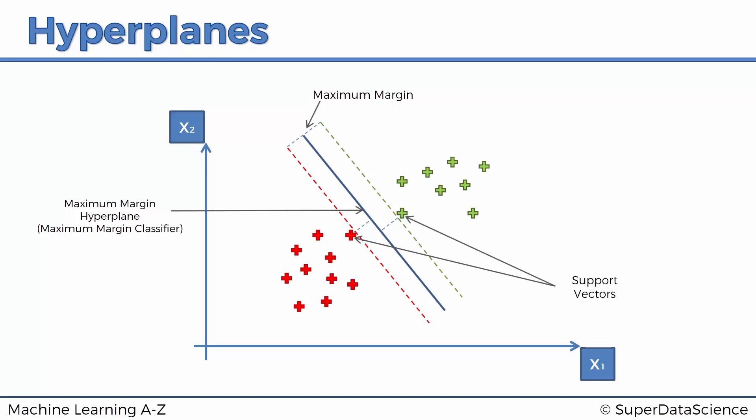In a two-dimensional space, it's just a line, but in a multi-dimensional space, it's a hyperplane. Then you've got the green and red dotted lines. The green one is called the positive hyperplane, and the red one is called the negative hyperplane. Anything to the right of the positive is classified as the green category, and anything to the left is classified as the red category.